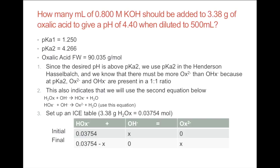Here's an example buffer problem: How many mL of 0.8 M KOH should be added to 3.38 g of oxalic acid to give a pH of 4.4 when diluted to 500 mL? We're given pKa1, pKa2, and oxalic acid formula weight. Since the desired pH of 4.4 is above pKa2 (4.26), we use pKa2 in the Henderson-Hasselbalch equation. There must be more OX²⁻ than HOX⁻, because at pKa2 they are present in a 1-to-1 ratio. Since pH is higher, there's more OX²⁻, indicating we use the second equation.